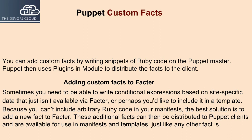You can add custom facts by writing snippets of Ruby code on the Puppet master. Puppet then uses plugins and modules to distribute the facts to the client. Sometimes you need to write conditional expressions based on site-specific data that just isn't available via Facter, or perhaps you'd like to include it in a template. Because you can't include arbitrary Ruby code in your manifests, the best solution is to add a new fact to Facter.